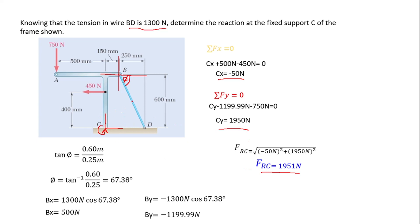Now we find the angle that the resultant force makes at C. We take the inverse tangent of the y-component over the x-component: tan⁻¹(1950/50). When finding the angle, neglect the negative sign since it only indicates direction. The sense (angle) is 88.5 degrees.